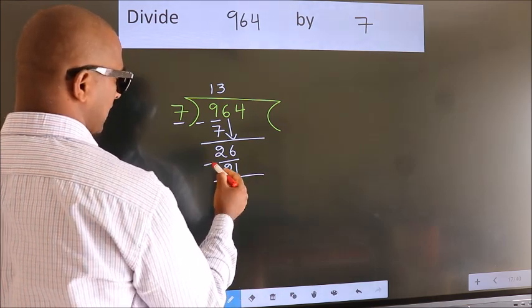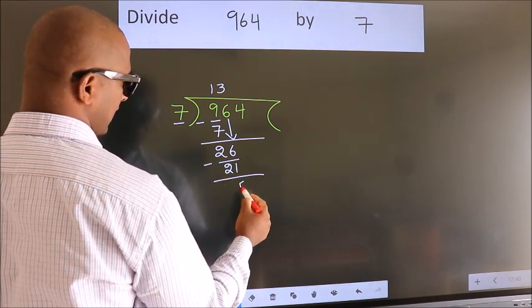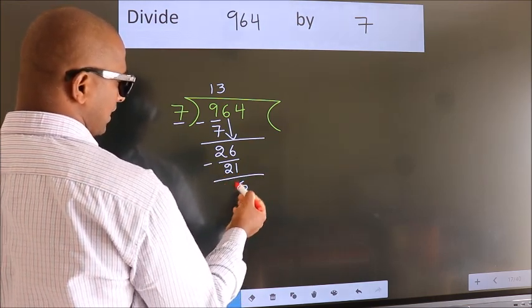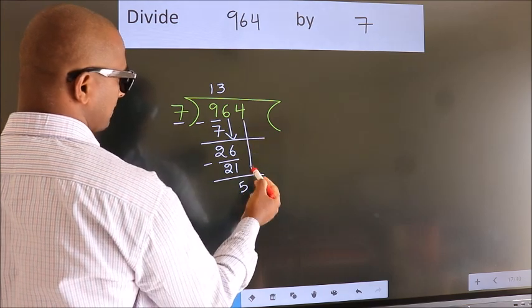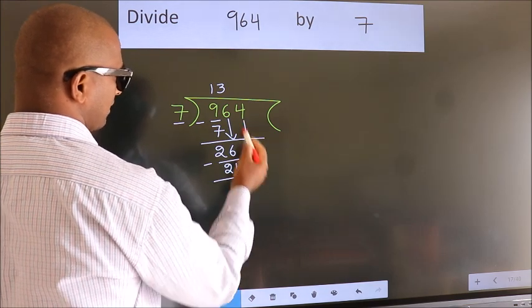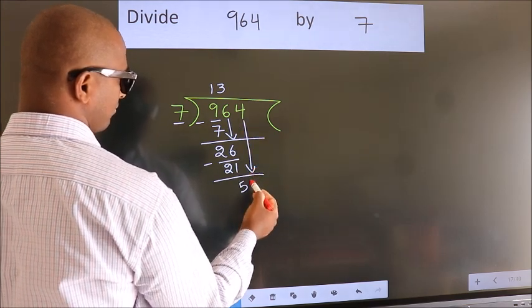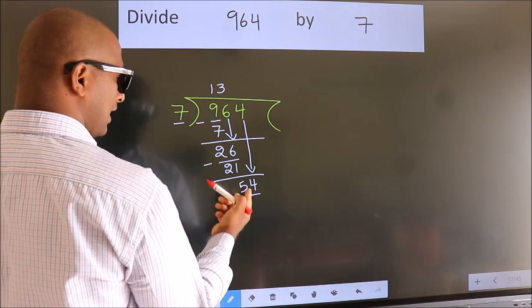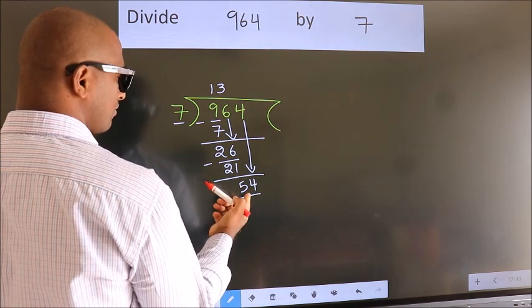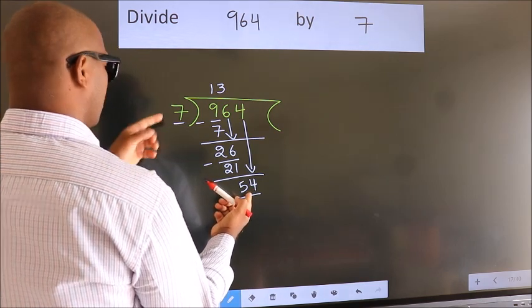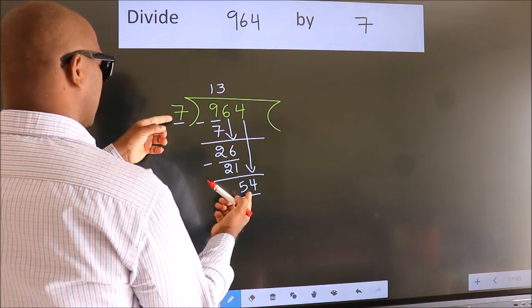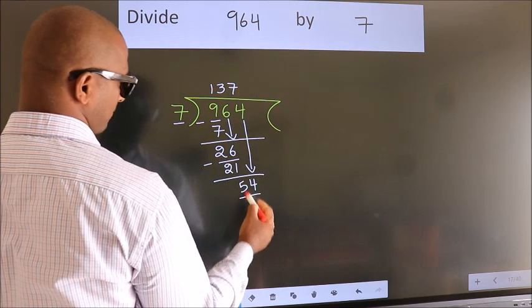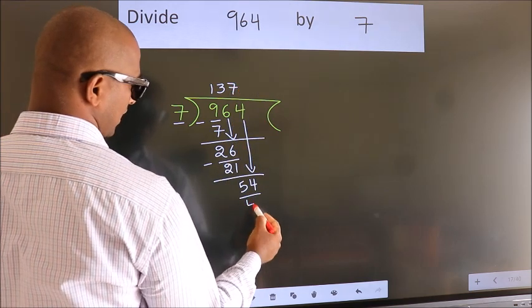Now we subtract. We get 5. After this, bring down the beside number. So, 4 comes down. So we have 54. A number close to 54 in the 7 times table is 7 sevens, which is 49.